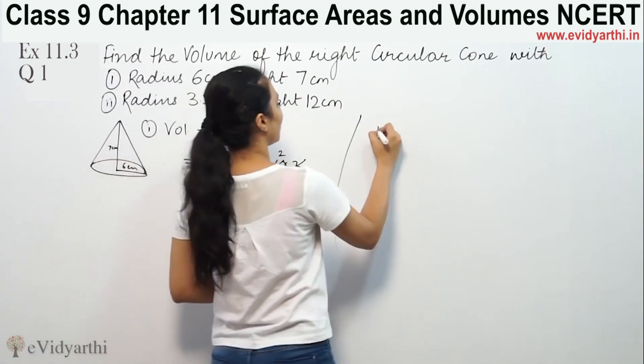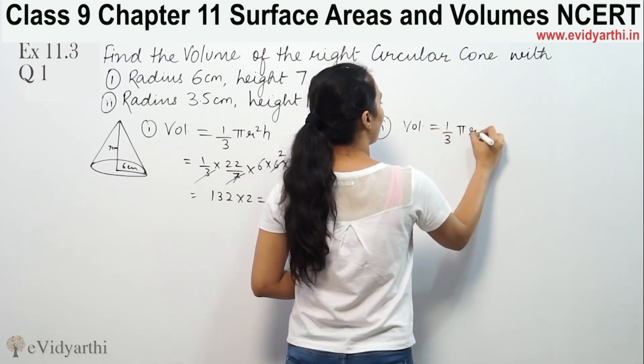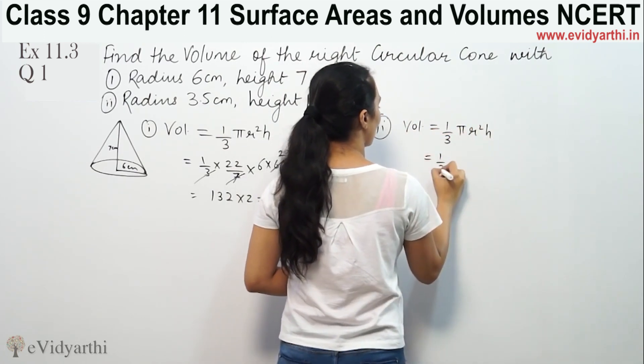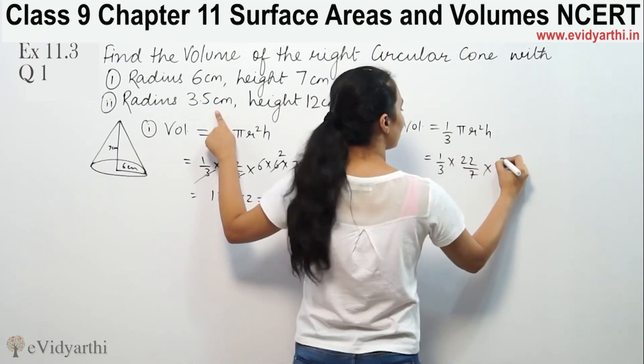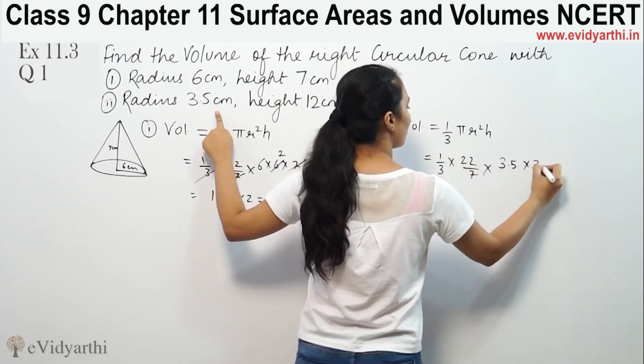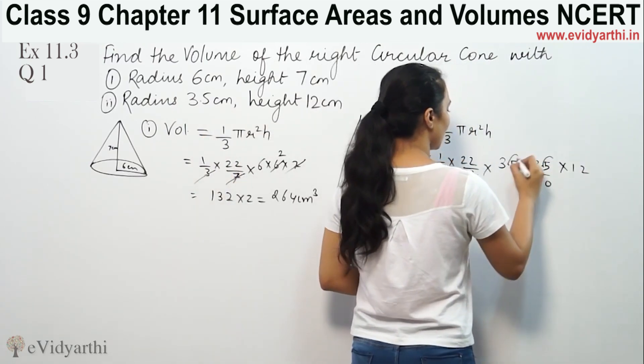Similarly second part: Volume is 1/3 πr²h. So 1/3 × 22/7, radius is 3.5 × 3.5 × height is 12. Decimal removed here, so 10.